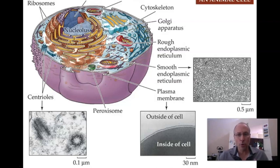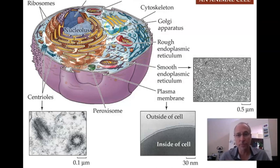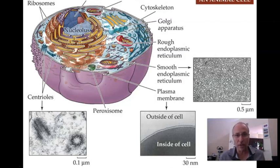All of these true organelles are bound by a membrane — that's the definition of a true organelle. Each one performs a particular function for the cell. Not all cells have every single one of these structures. There are many cells that don't have any mitochondria at all, and other cells that have lots and lots of mitochondria. There are some cells that have lots of cytoskeleton, while others have a different cytoskeleton doing different things.